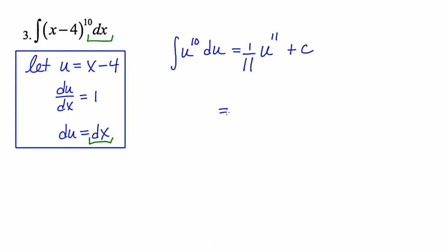And we'll finish the problem by back substituting in for u. What was u in the first place? Well, for this particular problem, u is x minus 4. And of course, don't forget the plus c. So here's our final answer for the second example.